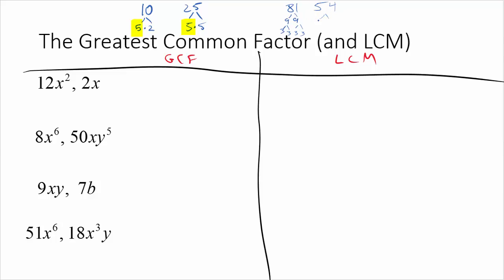And then if we look at 54, 54 we could split up into 9 times 6. We could split up this 9 into 3 times 3. And then the 6 could also get split up into 3 times 2. So you could see that they both have three 3's in common here. So if you multiplied those, 3 times 3 times 3, that would tell you that the greatest common factor for these two is 27.